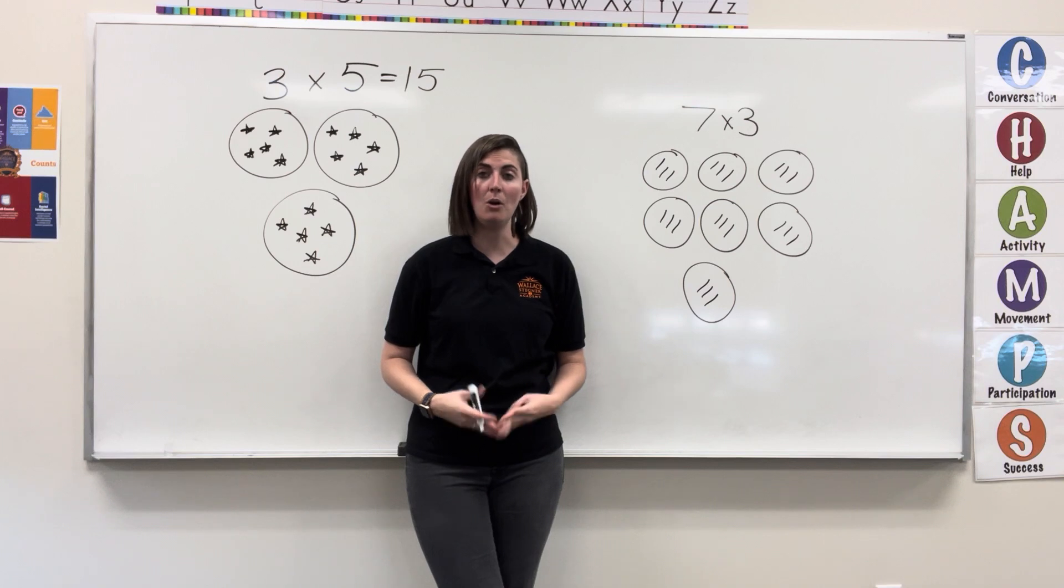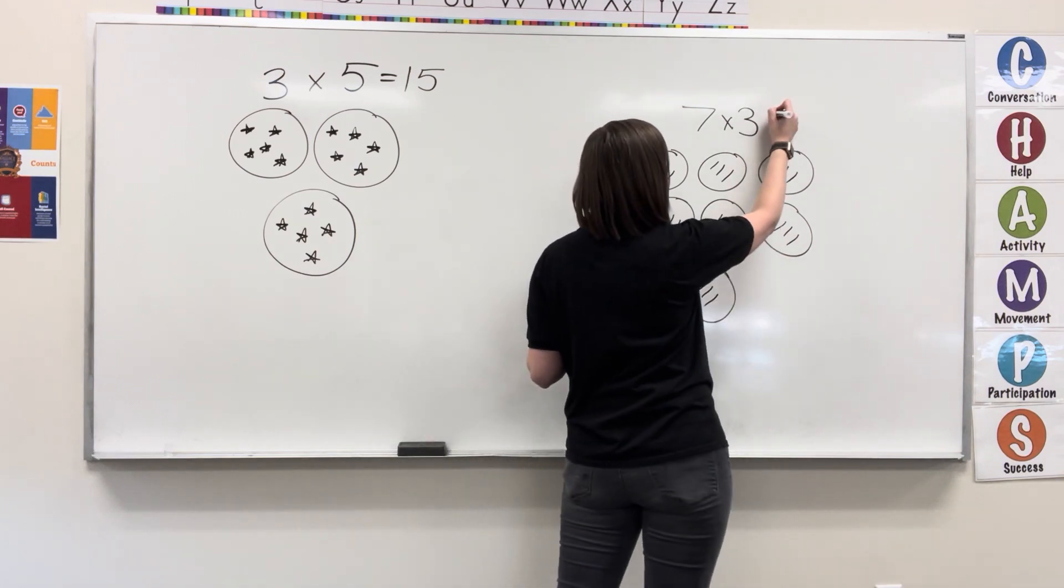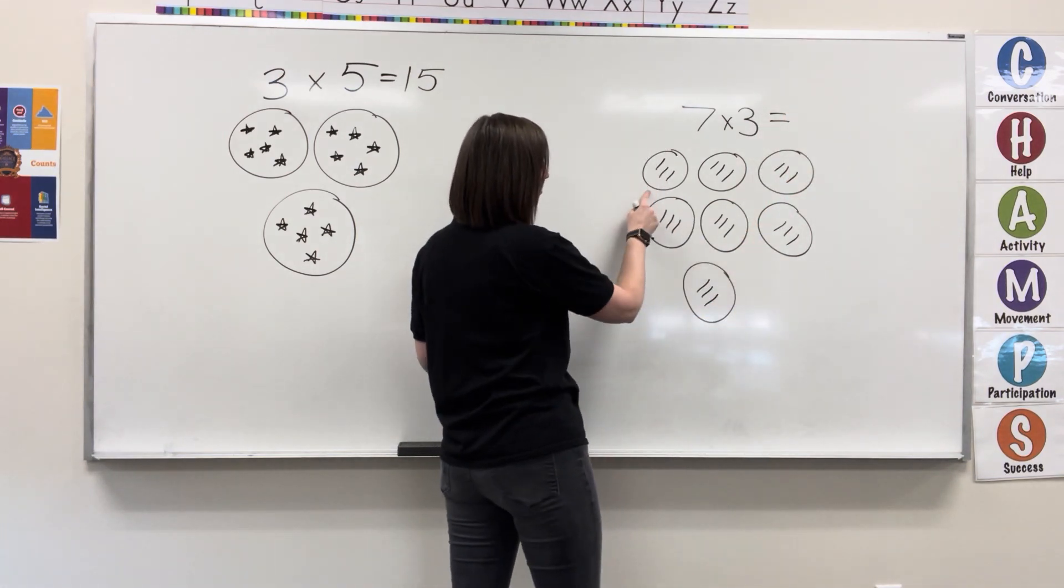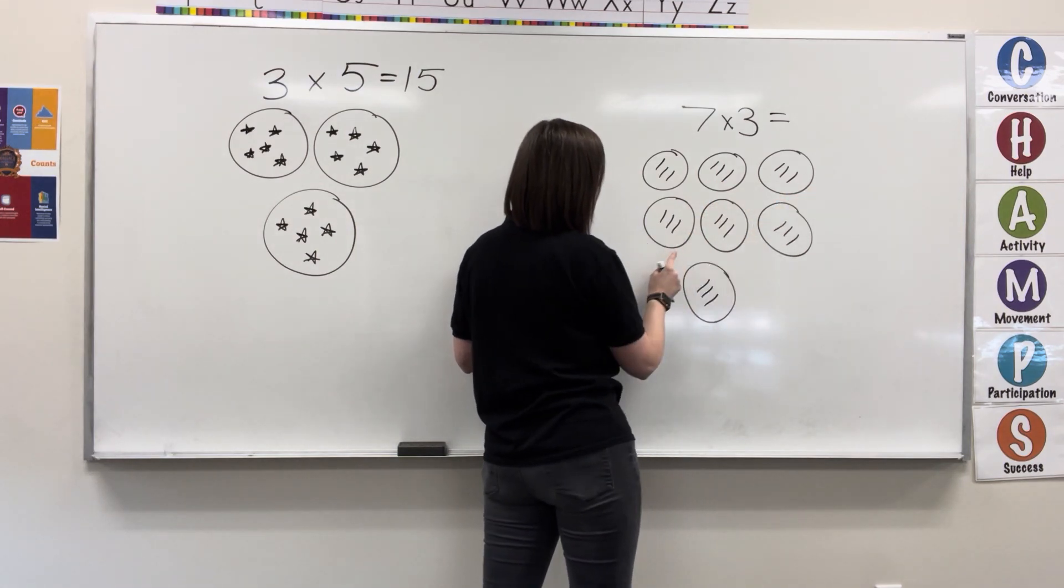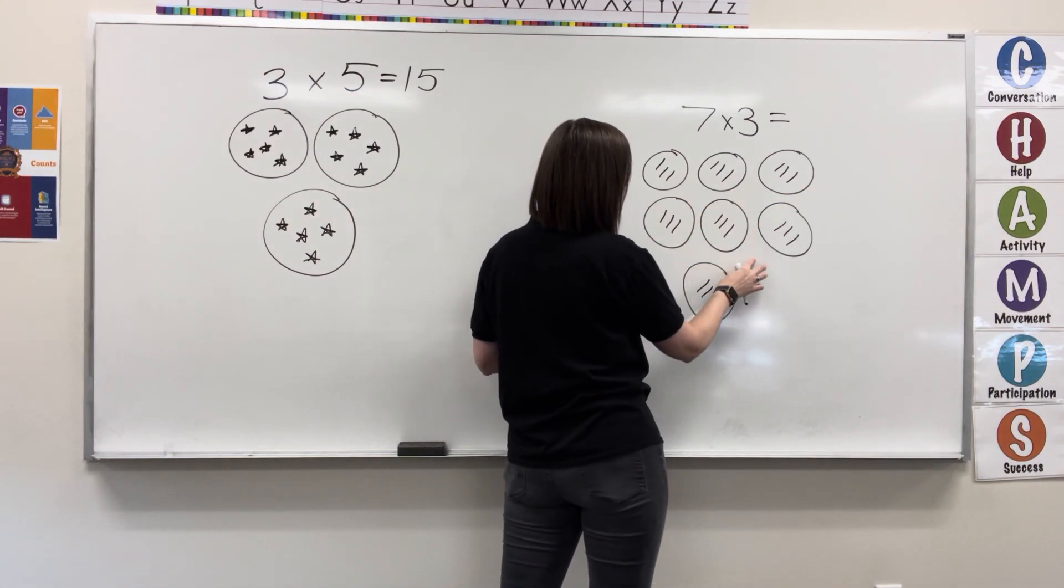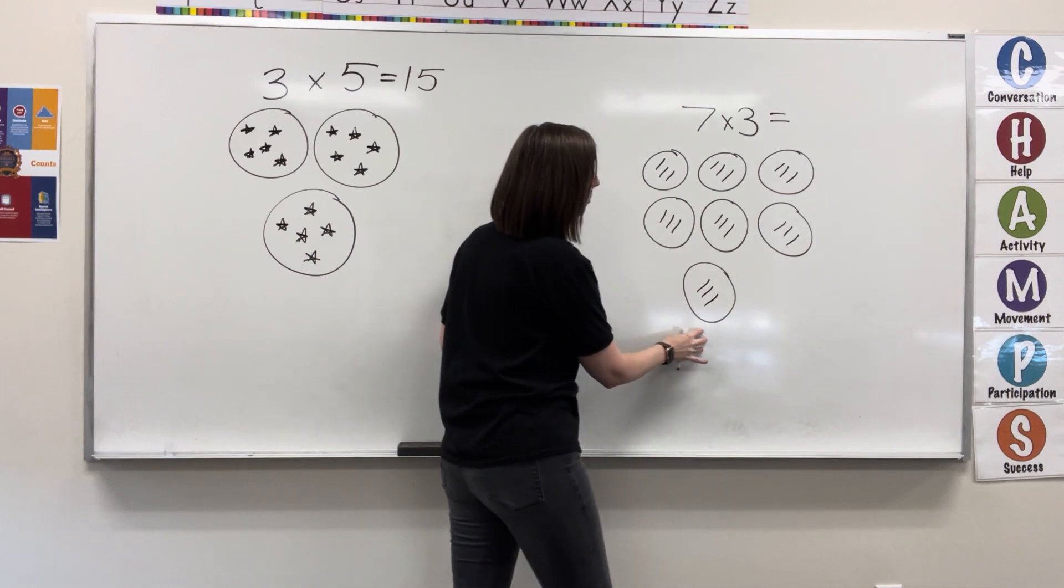I can count those to find out what our total is. So, we have three, six, nine, twelve, fifteen, eighteen, twenty-one.